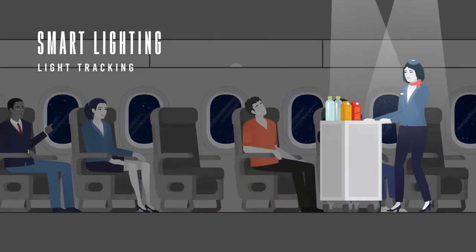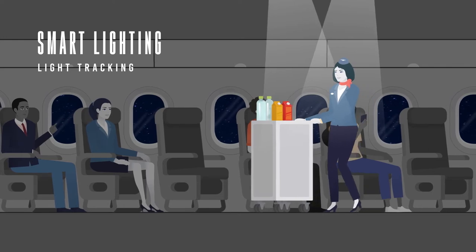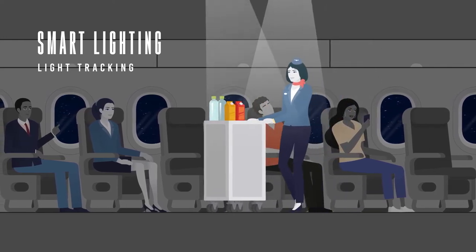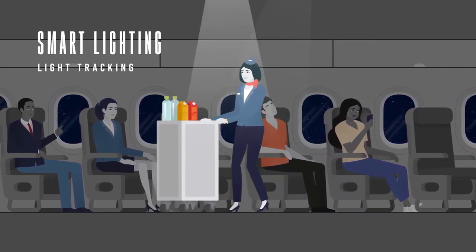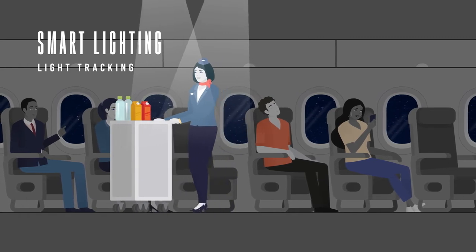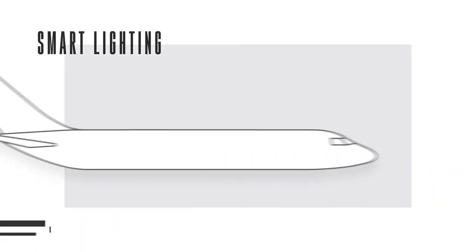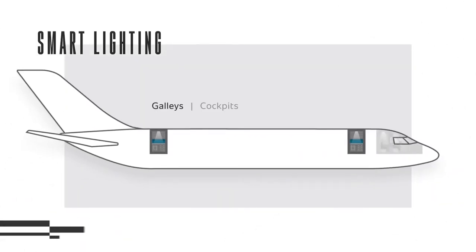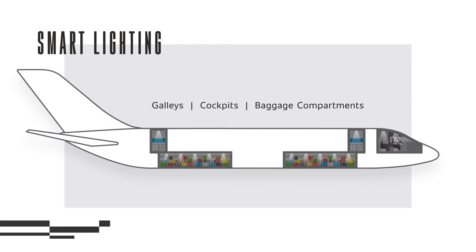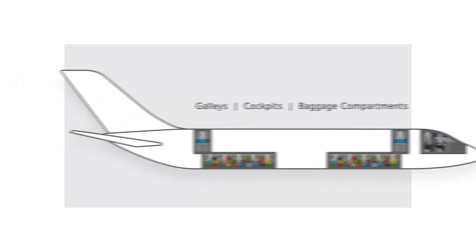During meal and beverage service, machine-vision cameras could track flight attendants, controlling focused LED pods that selectively light task areas without bothering passengers. Smart lighting could also be used in galleys, cockpits, baggage compartments, wherever intelligent task lighting is needed.